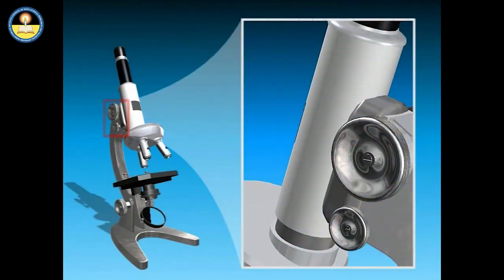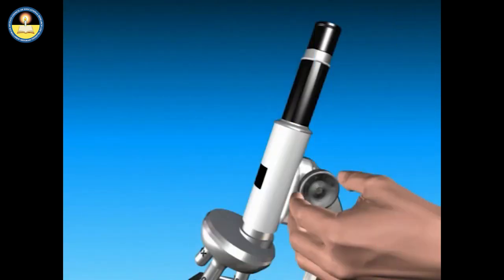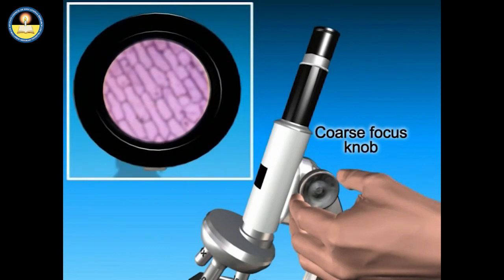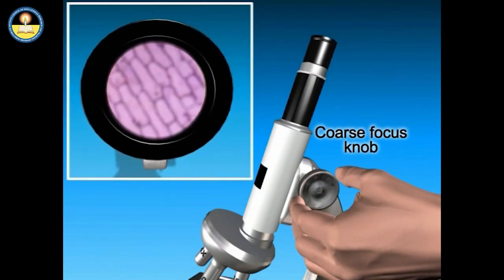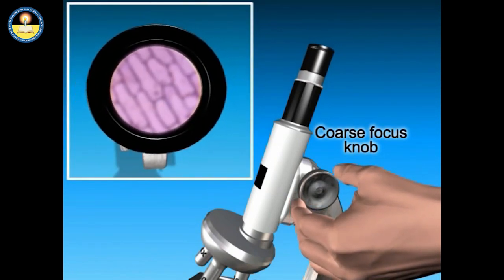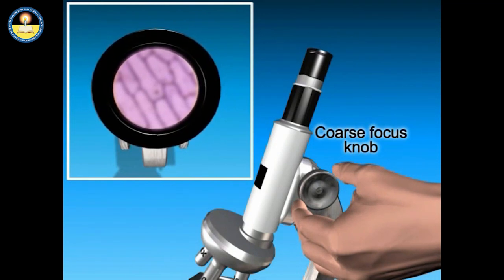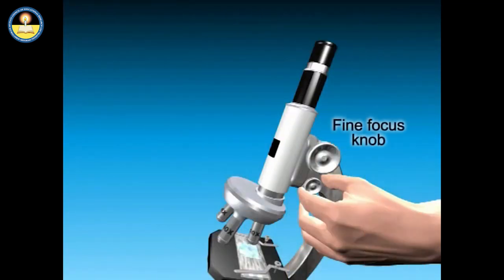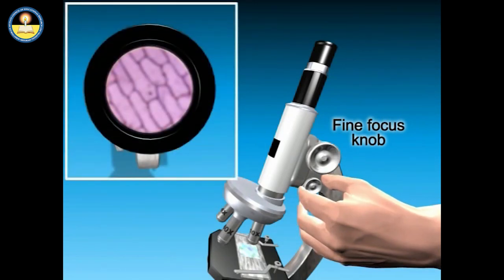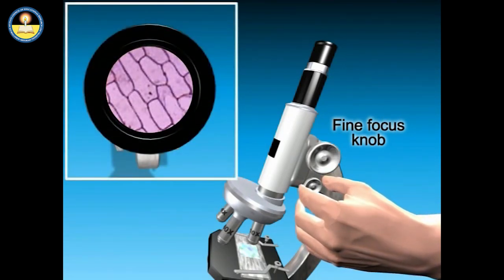There are two adjustment knobs on a compound microscope: one for coarse adjustment and another for fine adjustment. The coarse focus knob is used to bring the object into the focal area of the objective lens. The fine focus knob is used to make fine adjustments to focus the image.